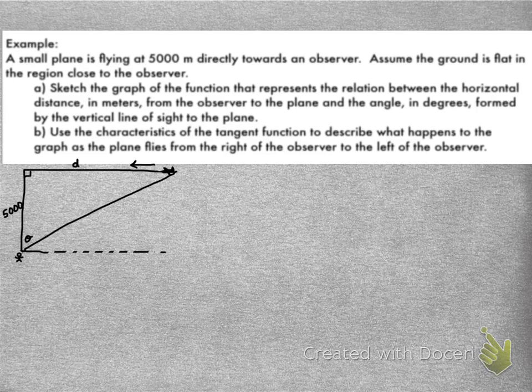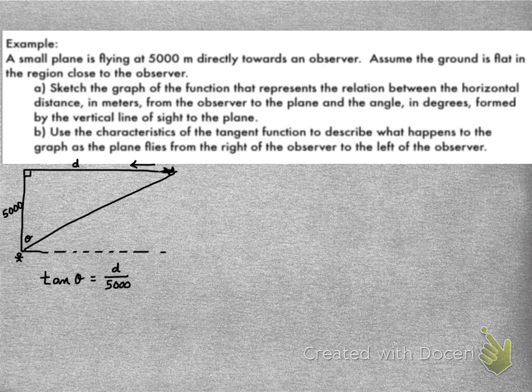the tangent of our angle is going to also decrease. Now, at 45 degrees, the tangent is going to be 1, because it'll be 5,000 over 5,000. But here we go. First of all, the tangent of our angle is opposite over adjacent, which is d over 5,000. Cross multiply and divide, and d will equal 5,000 times the tangent of theta.